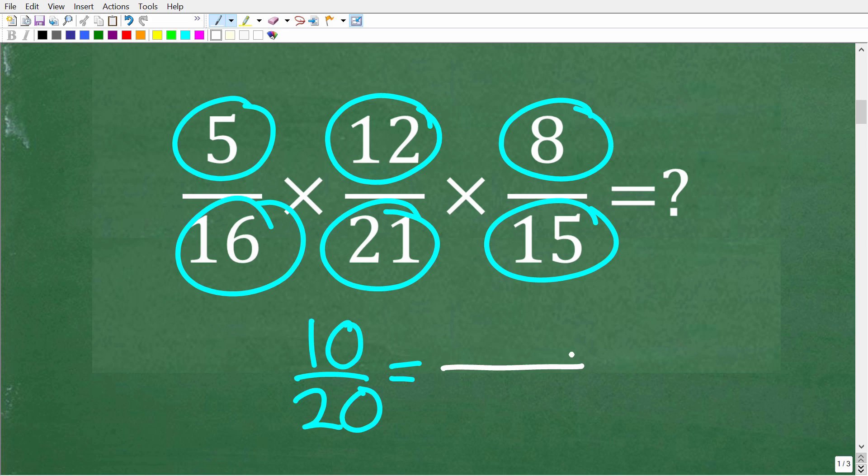But technically what's going on is you're thinking of 10 as 1 times 10, and 20 in your brain you're probably thinking of this as 2 times 10. So what we have is like factors in the numerator and the denominator. We have a 10 up here and a 10 down here. So anytime you have like factors in a fraction, you can simply cross cancel them, and then what's left is the simplified version of that fraction. And that is exactly what we're going to do right here.